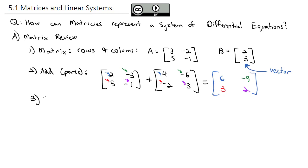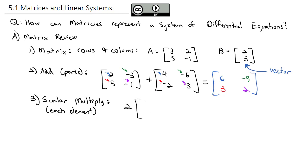Another thing we can do with matrices is scalar multiplication, which means we multiply each element by that scalar. A scalar is just a regular number out front, like the number 2 in front of the matrix [3, -1; 4, 6]. We multiply every element by 2: 3×2=6, -1×2=-2, 4×2=8, and 6×2=12. Scalar multiplication is pretty straightforward.